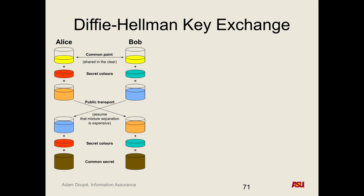Alice and Bob each have their own secret colors and this shared common secret that Eve doesn't know. Both Alice and Bob have this exact same common secret. They can now say: this is going to encrypt our AES communication. They never shared this common secret key in public — they each derived it independently. They can't control exactly what that value is, which is why this is called a key exchange protocol, not an encryption protocol.